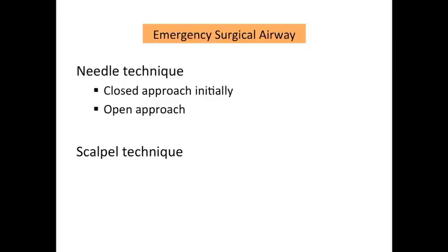Once the need for an emergency surgical airway has been identified, we advocate using the techniques outlined by Andrew Heard and his team at the Royal Perth Hospital. A needle technique is usually the best initial approach for critically care trained clinicians. The first attempt should be with a percutaneous or closed approach. If this is unsuccessful and the problems are thought to arise from difficulty identifying airway anatomy, then dissection down until the laryngeal structures are more easily identifiable is recommended on the second attempt. Conversely, if the needle technique fails despite clear identification of airway landmarks, then the second attempt should be with a scalpel and bougie technique. Scalpel cricothyroidotomy is also an accepted first-line technique in situations where the person performing the procedure is more familiar with that technique.